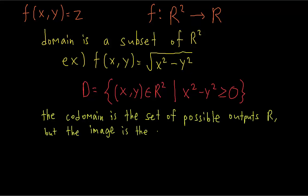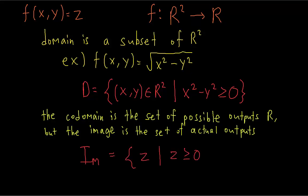The image, or range of the function, is the set of actual outputs. The codomain is like the space in which the objects in the image or range live. All of the outputs of the function come from the real number line R, but every single real number may not necessarily be linked to an input in the domain. For example, in this function the image is all real numbers z such that z is greater than or equal to zero, because when we take the square root of x² minus y², it's always going to be positive or zero.